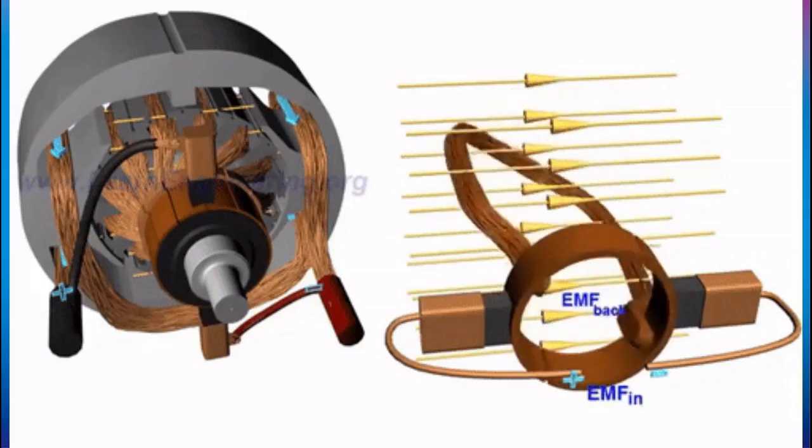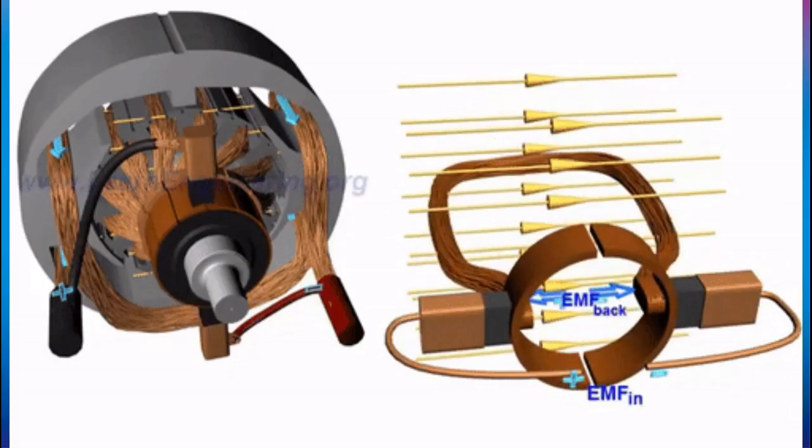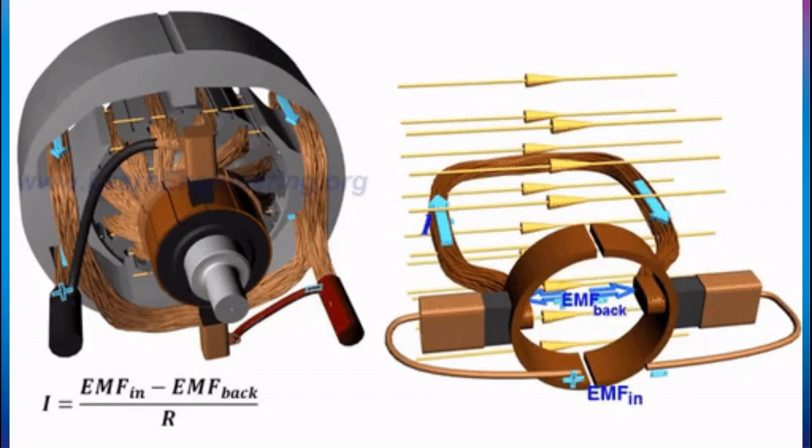An AC motor, or alternating current motor, is an electric motor that consists of a stator with a coil that is supplied with alternating current to convert electric current into mechanical power.